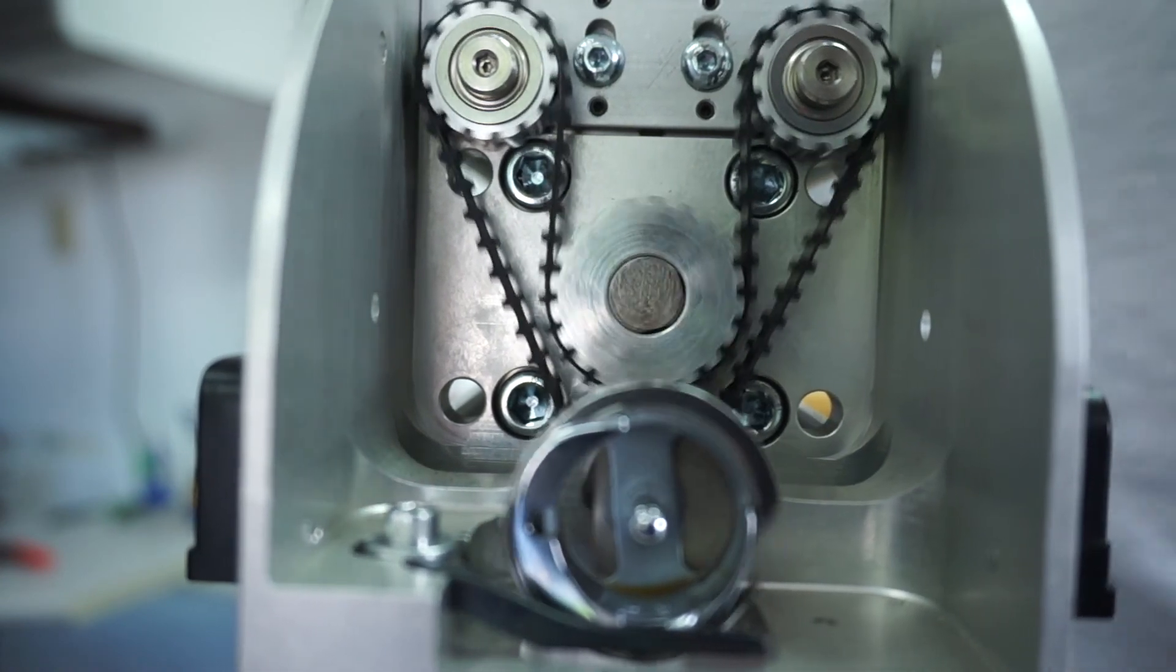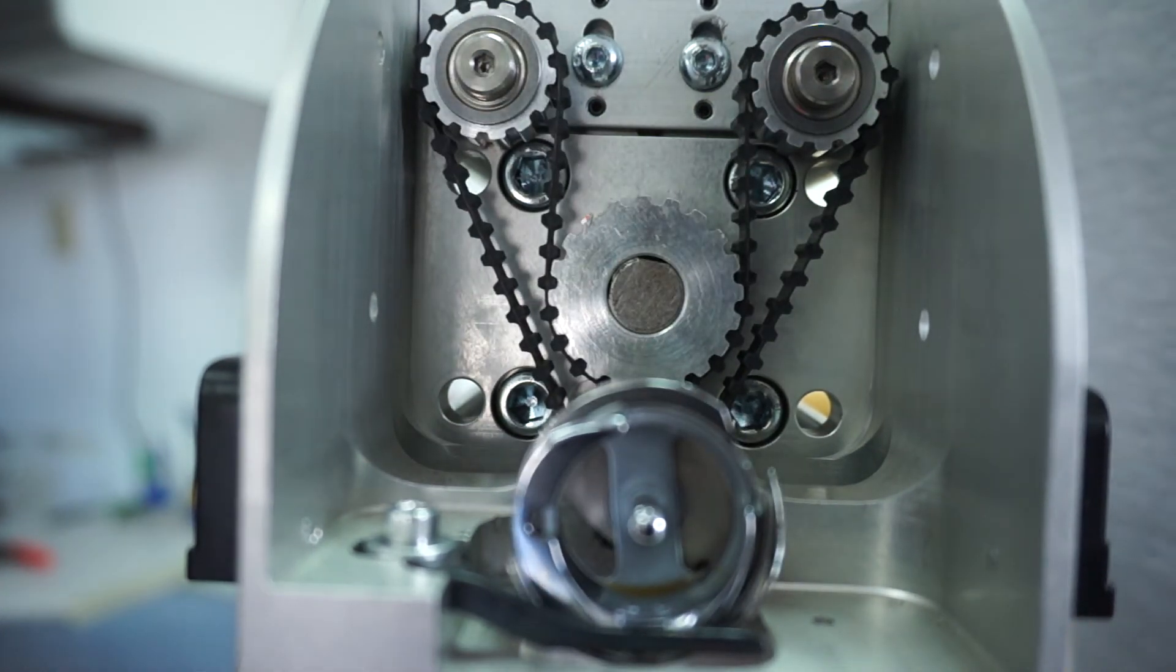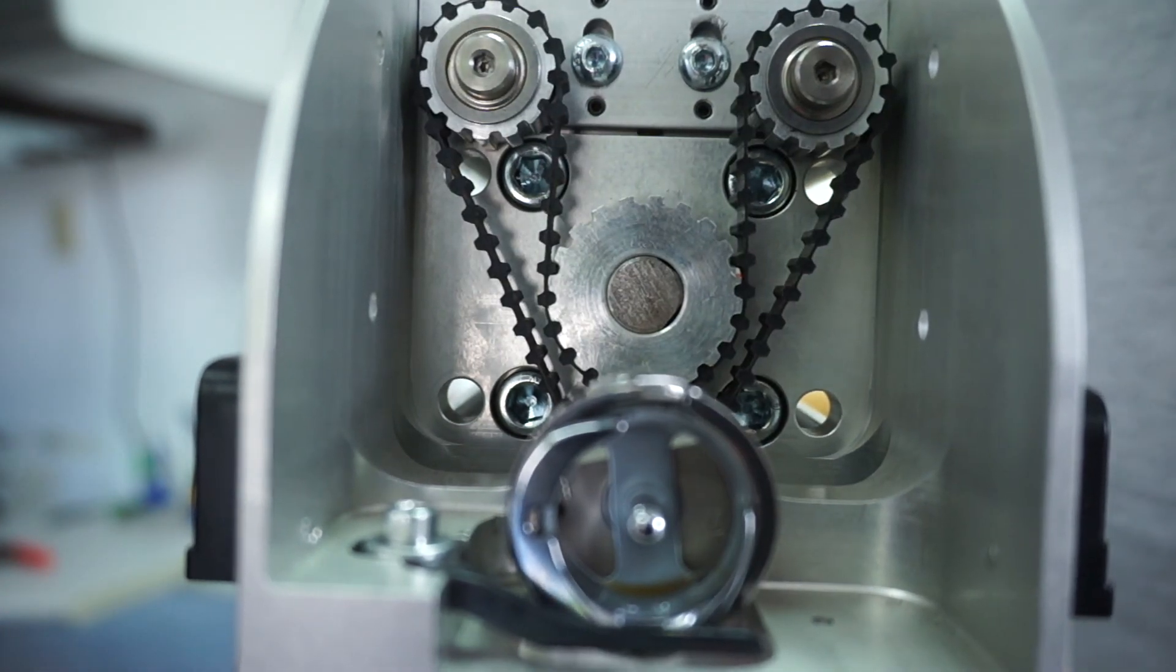And that's what it is. There you have it. That's all there is to changing the timing belt on this Prodigy machine. Thank you, and I hope this helps.